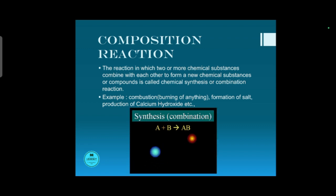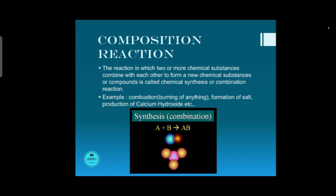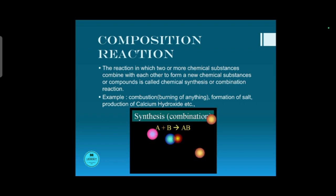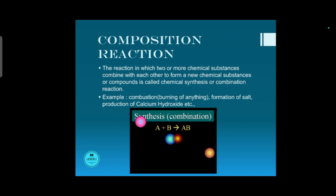Coal is a carbon compound made up of carbon. When it reacts with oxygen — whenever it burns — it reacts with oxygen and forms carbon dioxide. So this is a composition reaction or combination reaction.